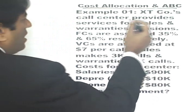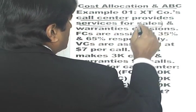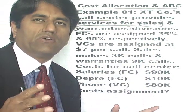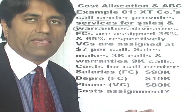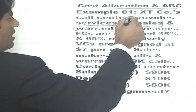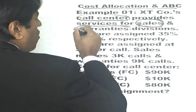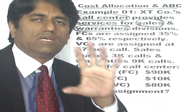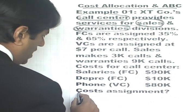Here we have a firm which has a call center, and it provides services for a sales department and a warranties department. This cost allocation is going to come up again and again — you have one firm doing more than one thing, and how do you allocate the cost to the different operations? The call center has a certain cost and it provides services to both sales and warranties. We have to figure out the cost assignment.